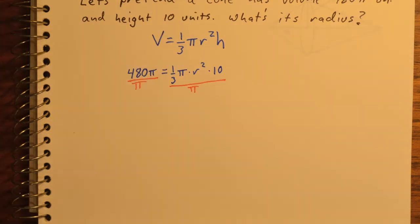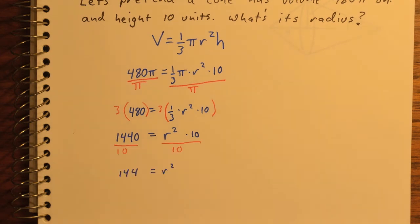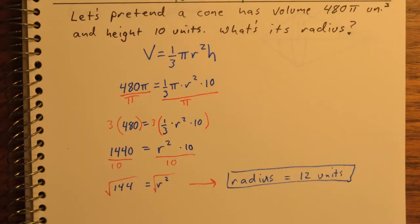I see both sides of the equation have pi, so I'll divide by pi. I've got that pesky 1/3, so I'll multiply both sides by 3. Then I'll divide by 10. So r squared is 144, which means the radius must be 12 units.